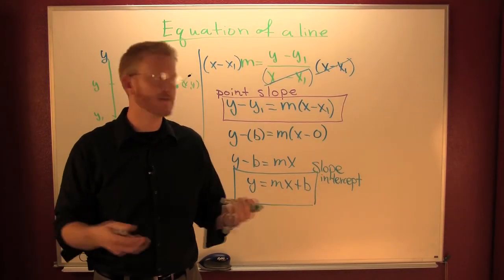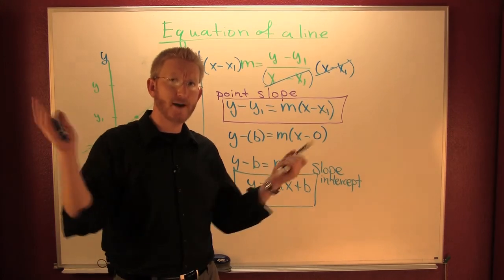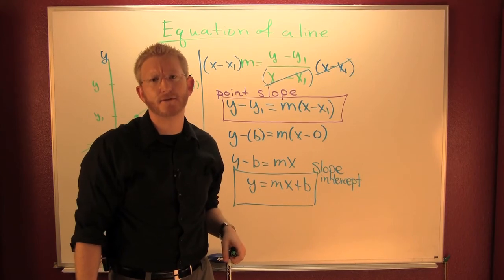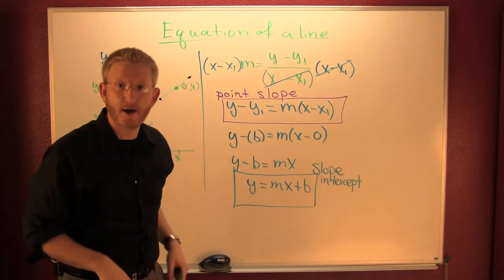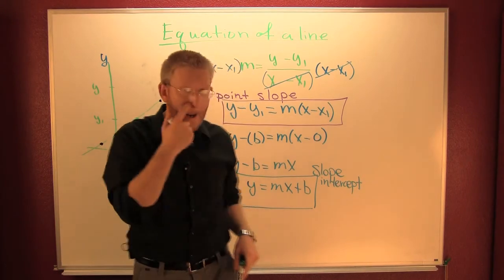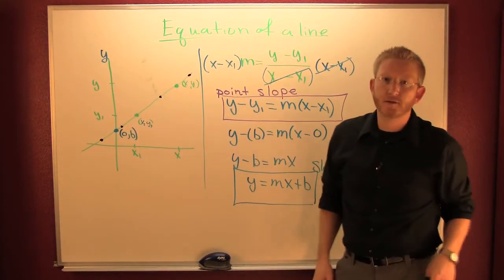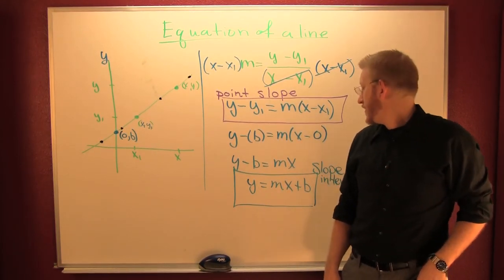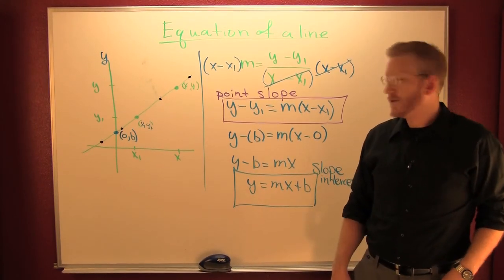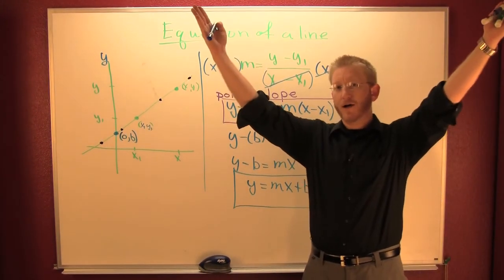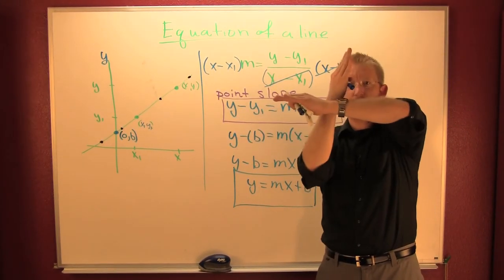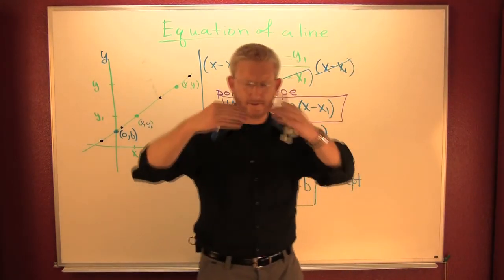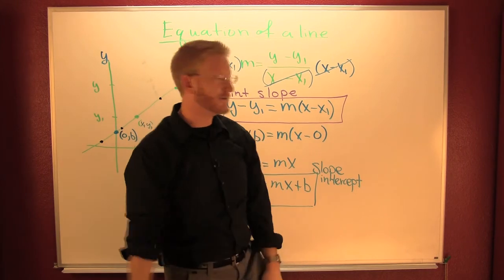That's the slope-intercept form — it's famous. It's got a theme song. It goes to the Village People — you know, YMCA. You can't see my legs, can you? Oh well. The Village People, YMCA. It goes: y equals mx plus b.